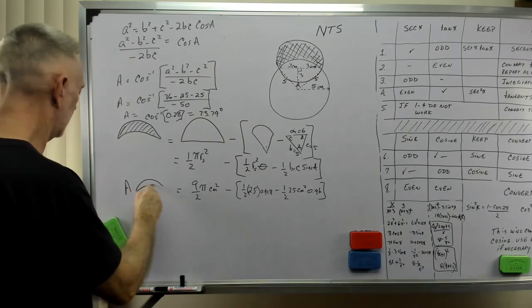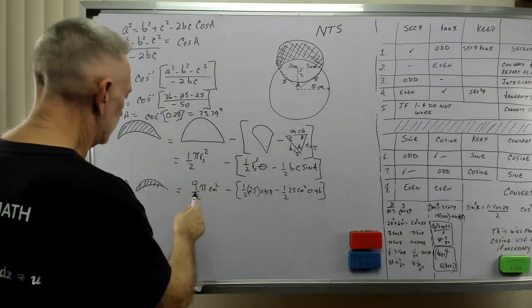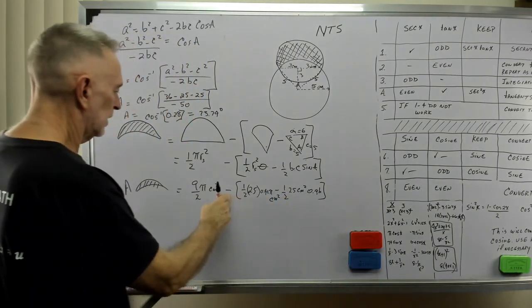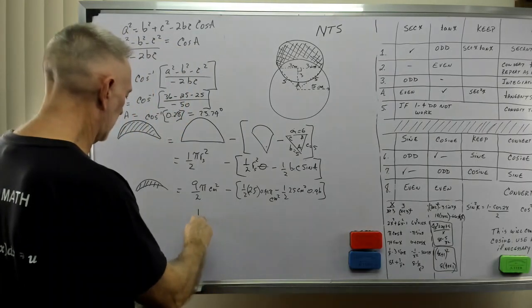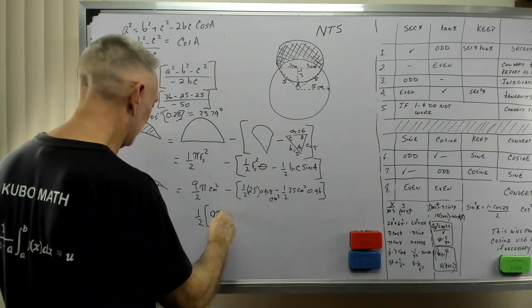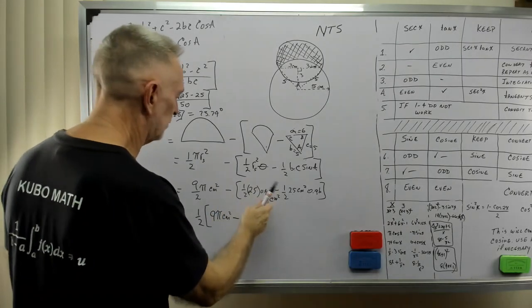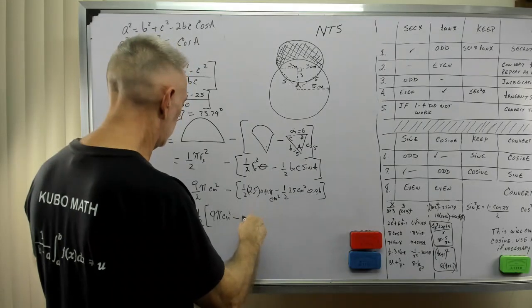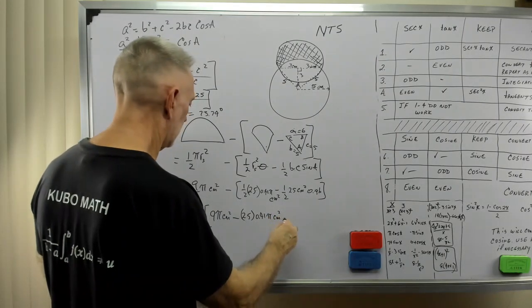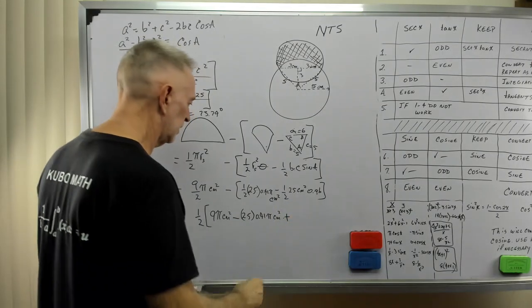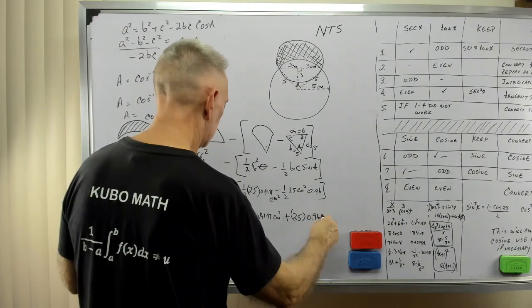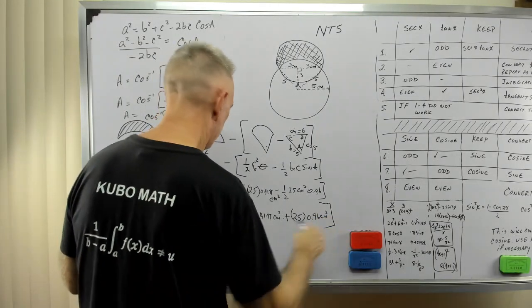All right, so the area of the banana, that area is 9 halves pi centimeters squared, and that's centimeters squared on every unit. And you'll notice I've got a one half, a one half, a one half, so let me pull the one half out. That's 9 halves, that's 9 pi centimeters squared minus, now I'm distributing the negative sign to the inside. Negative 25 times 0.41 pi centimeters squared.